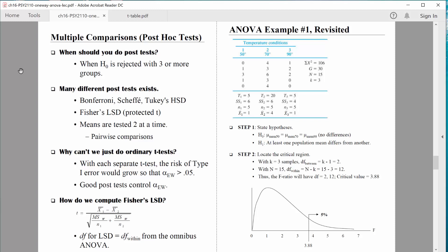So we can ask ourselves the question, when do we need to do post-tests? Well, any time we've rejected the null hypothesis for the omnibus test and we have three or more groups. If we have three groups or four groups or five groups and the overall test is statistically significant, we don't yet know exactly which groups differ. So we need to do the post-tests.